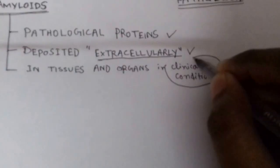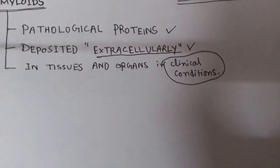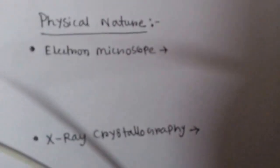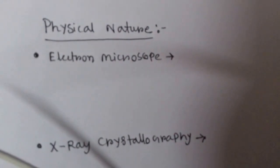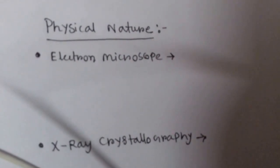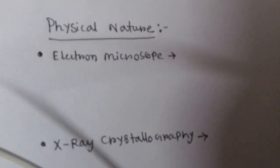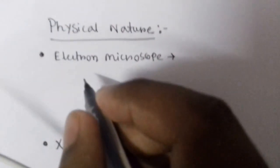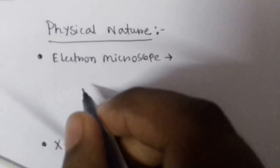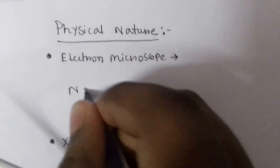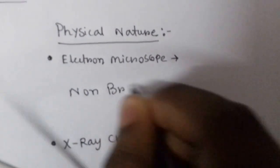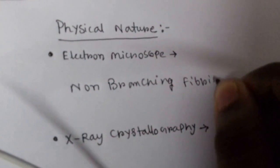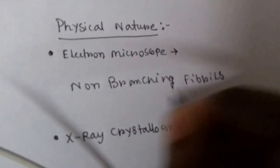What are the natures of these amyloids? In physical nature we can assess by two means. We can examine them under electron microscope, then we will see they are non-branching fibrils of indefinite length.